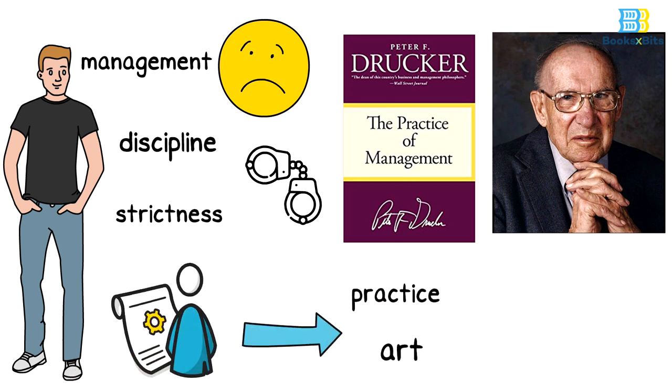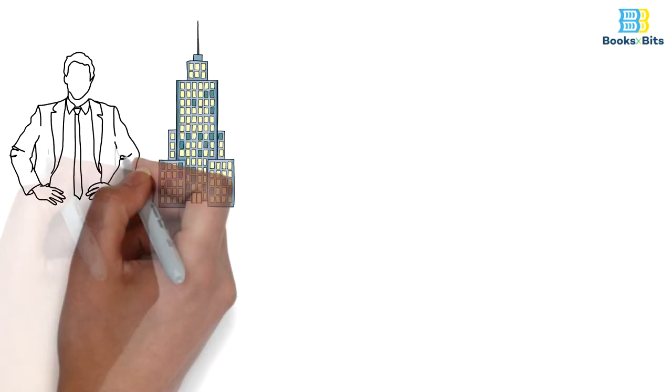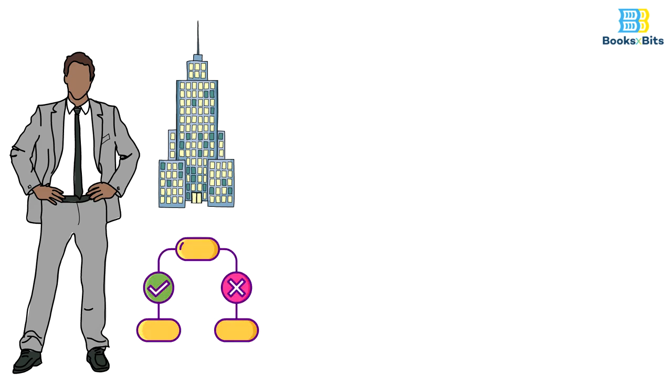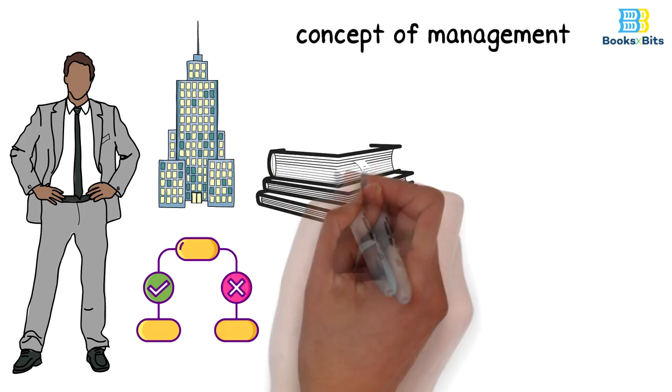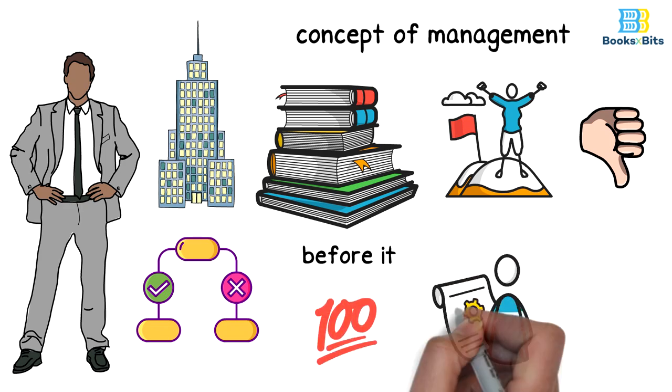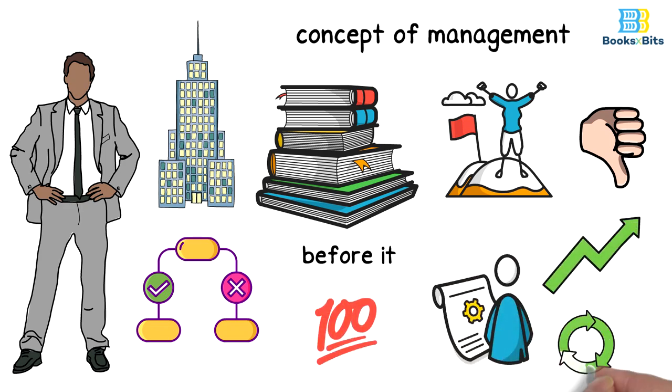It is a real book that discusses management as a whole and describes it as a distinct function and specific work. It talks about running a company, managing directors, and discusses how decisions are made. Therefore, Peter Drucker has introduced the concept of management in an unprecedented way despite the presence of important writings and books before it. So this book introduced the successes or failures of companies and institutions, which made those interested in this type of work realize the importance of management and seek to improve and develop their performance.